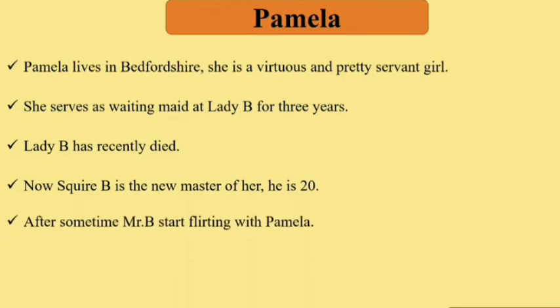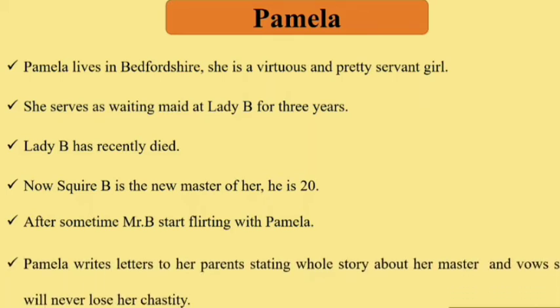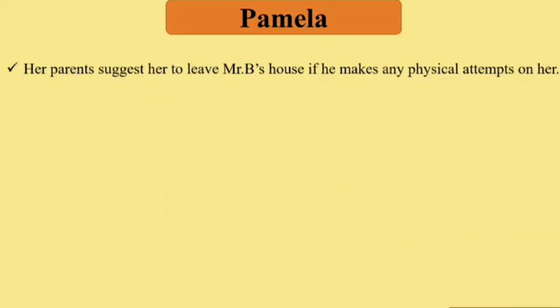After some time, Mr. B starts flirting with Pamela. Pamela writes a letter to her parents telling them the whole story about her master and declaring she will never lose her chastity. Her parents suggest that she should leave Mr. B's house if he makes any physical attempts on her.